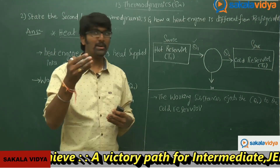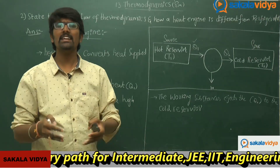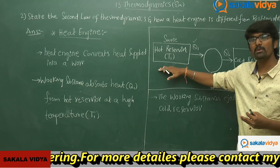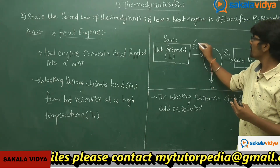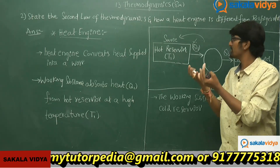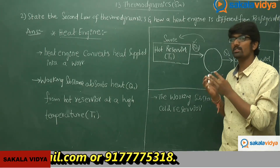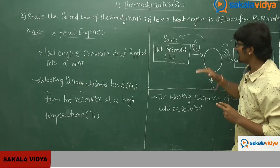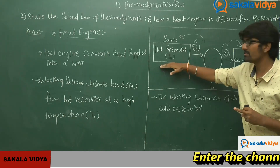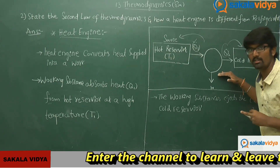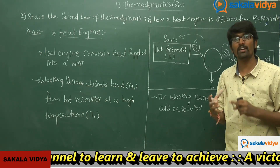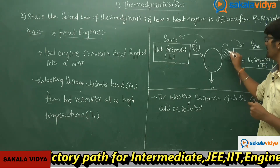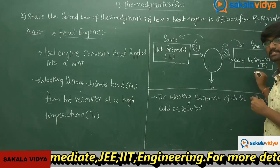The heat engine converts the heat supplied to it into some useful work. The working substance absorbs heat Q1 from the hot reservoir maintained at T1, then some internal work is done, and after that the working substance rejects heat Q2 to the cold reservoir. Looking at the direction of arrows, heat is transferred from the hot reservoir at T1 to the working substance, and then Q2 is released from the working substance to the sink, that is the cold reservoir.